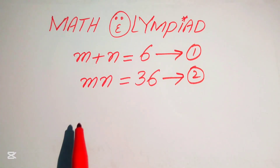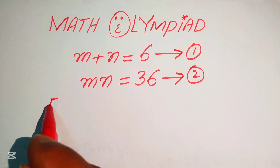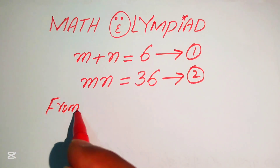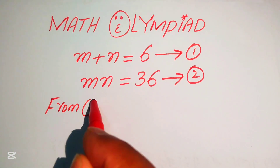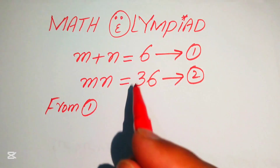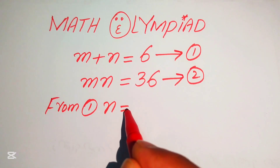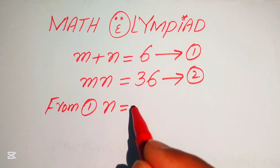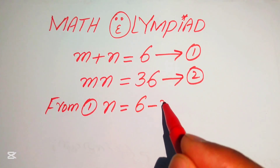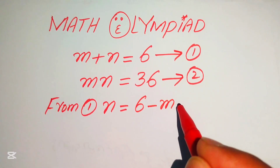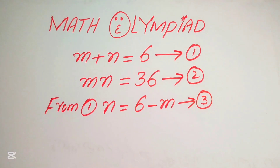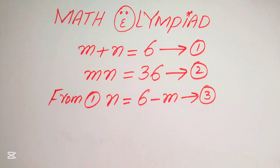Here we focus on equation number 1. From equation number 1, we move m to the right hand side and it will be written as n equals to 6 minus m, and we call this equation number 3.